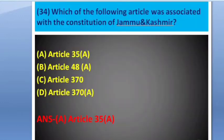Next question: Which of the following articles is associated with the special constitution of Jammu and Kashmir? Options: Article 51, Article 50A, Article 48A, Article 370, and Article 370A. The answer is Article 370.